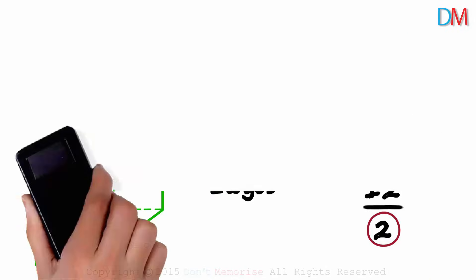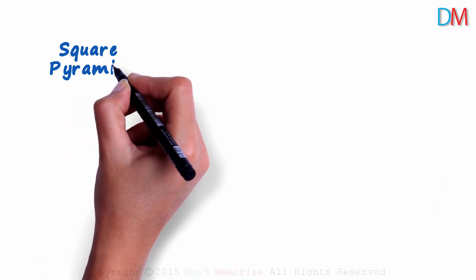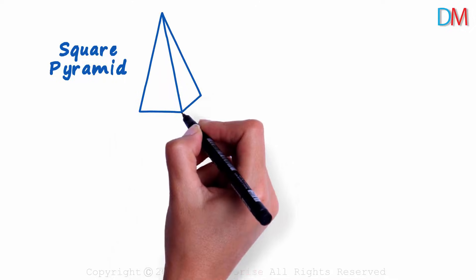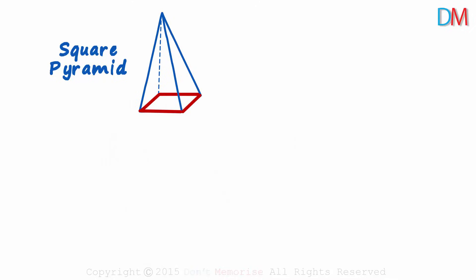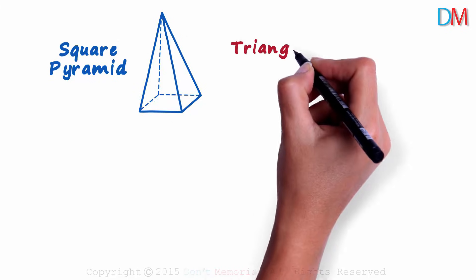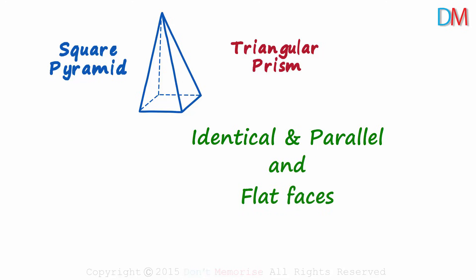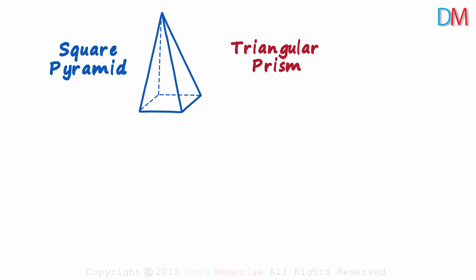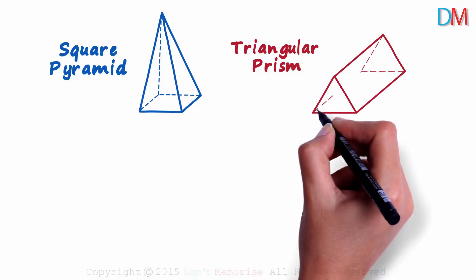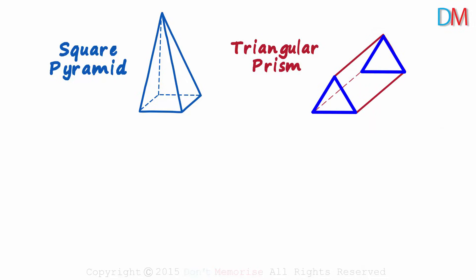Do you remember what a square pyramid looks like? It is a figure with a square as its base and triangles as its faces — a square base and four triangles as faces. And what is a triangular prism? A prism is a three-dimensional solid which has identical and parallel ends and all flat faces. A triangular prism has two identical and parallel triangles at its ends and three rectangular faces.